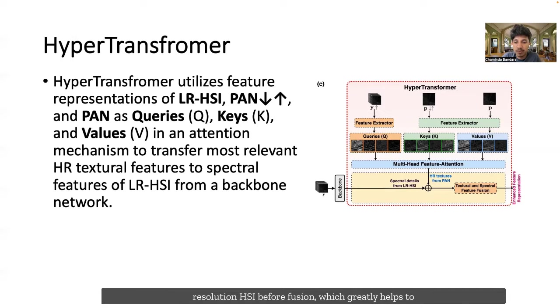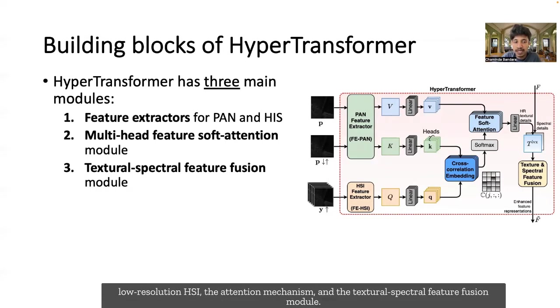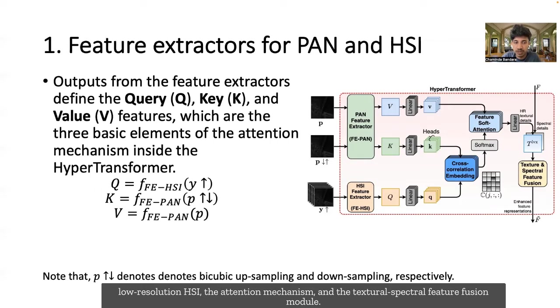which greatly helps to obtain pan-sharpened HSI with simultaneous high spectral and spatial qualities. Our hyper-transformer consists of three interconnected modules, namely two feature extraction modules for pan and low-resolution HSI, the attention mechanism, and the textural-spectral feature fusion module.